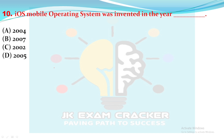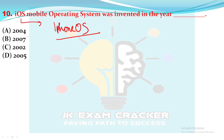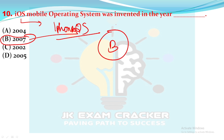Question 10: iOS operating system. iOS is a mobile operating system. The full form is iPhone Operating System. It was invented in 2007. Option B is the answer.